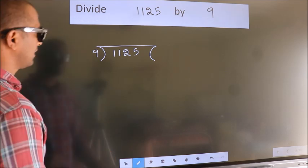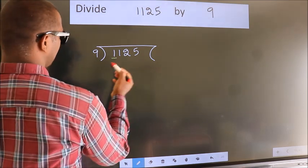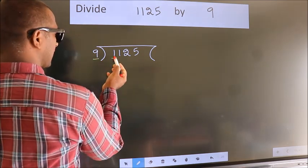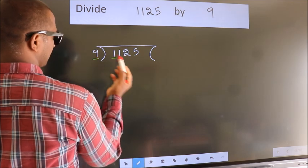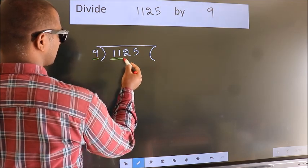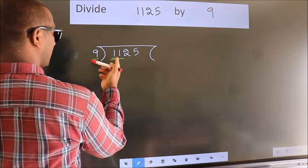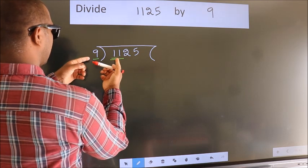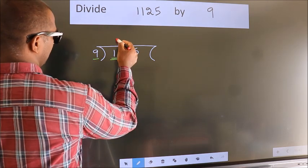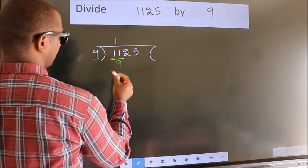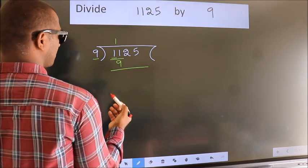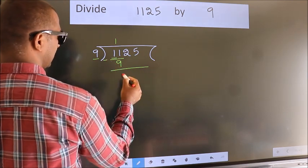Next. Here we have 1, here 9. 1 smaller than 9. So, we should take 2 numbers, 11. A number close to 11 in 9 table is 9 once 9. Now, we should subtract. We get 2.